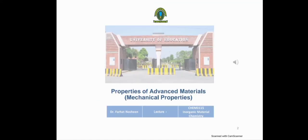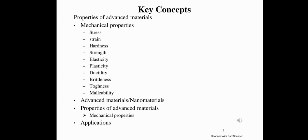Assalamu alaikum class, my name is Bilal Akram and my presentation topic is mechanical properties of advanced materials. There are different properties of advanced materials like electrical properties, dielectric properties, optical properties, magnetic properties, chemical properties, and mechanical properties. The key concepts are mechanical properties, stress, strain, hardness, strength, elasticity, plasticity, ductility, brittleness, toughness, malleability. Advanced materials are nano materials.